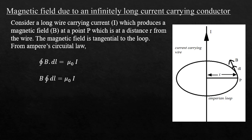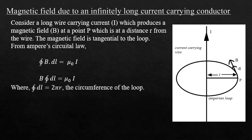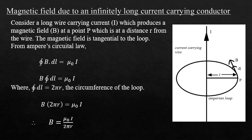Since B is constant, taking it out: B into the integral of dL is equal to µ0 times current I. The integral of dL equals the circumference of the loop, which is 2πR. Therefore, B into 2πR is equal to µ0 times I, giving the magnetic field B equal to µ0 times I divided by 2πR.